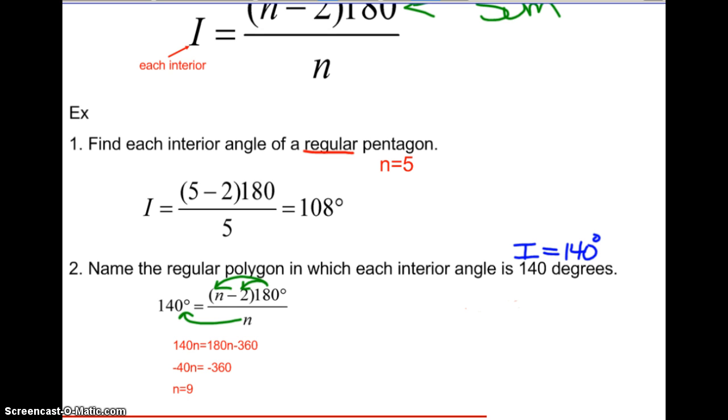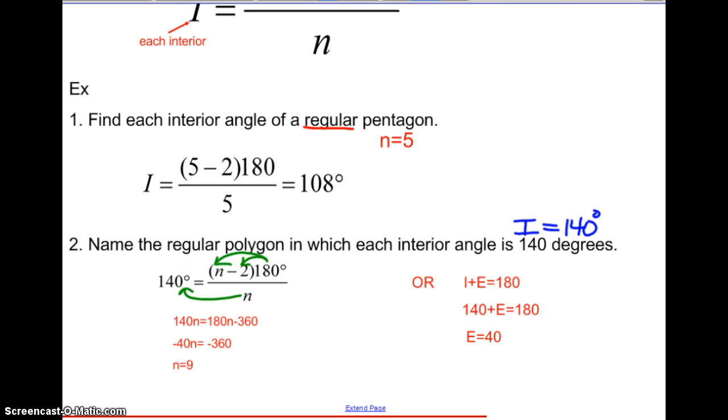Now, we can make this problem a little bit easier if we think about the fact that each interior and each exterior are supplementary. So if the interior is 140, then each exterior is 40. And from here, the exterior sum we know is 360 degrees. So if we take 360 degrees and divide it by 40 degrees, we have nine sides. So it's much easier to think each exterior than it is to think each interior. But still, if you want a systematic process with the formula, there you go.